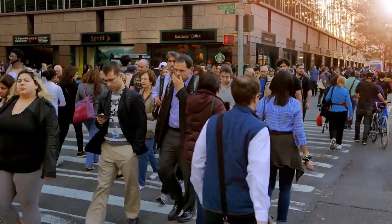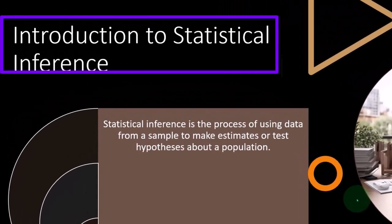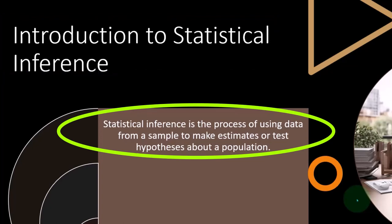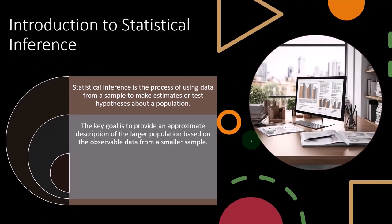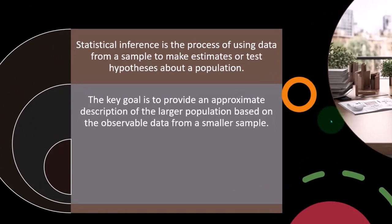We're going to use similar tools as with the first bucket of statistics — we're still going to be looking at things like the average, the mean, the median, and the spread of the data. But what we're hoping to do once we know that is infer that onto the entire population, so we have predictive power about the entire population. The key goal is to provide an approximate description of the larger population based on the observable data from a smaller sample. We want to know information about the small sample so that we can infer that to the larger population.